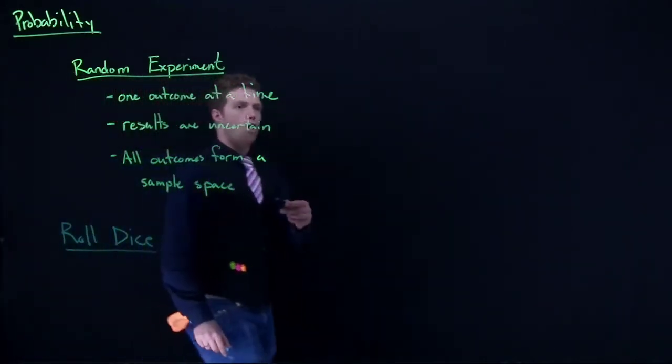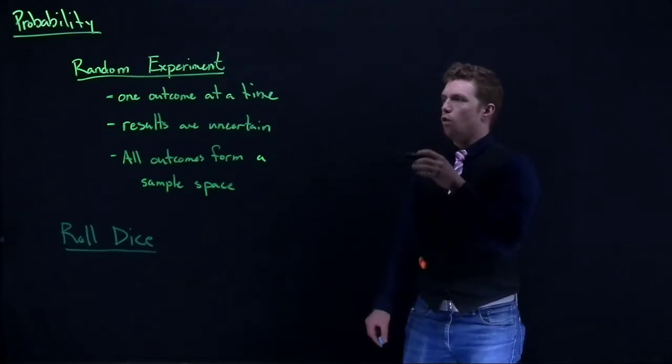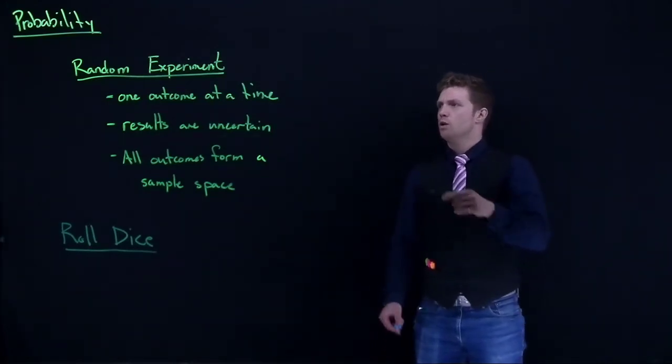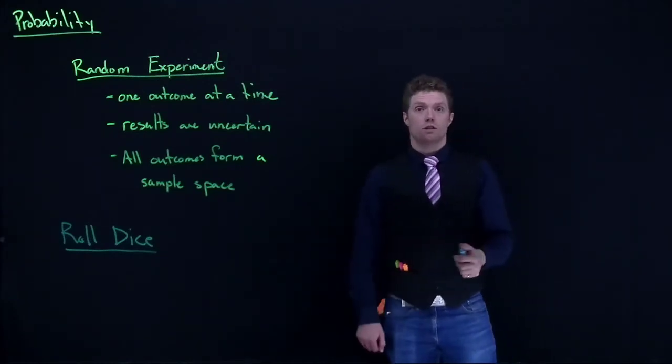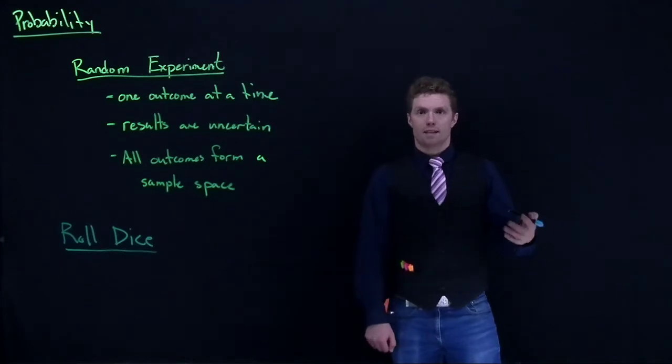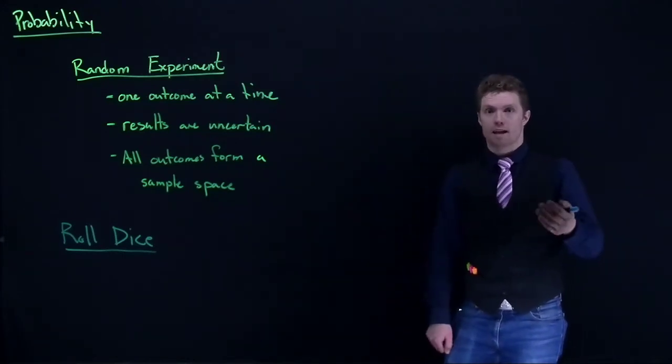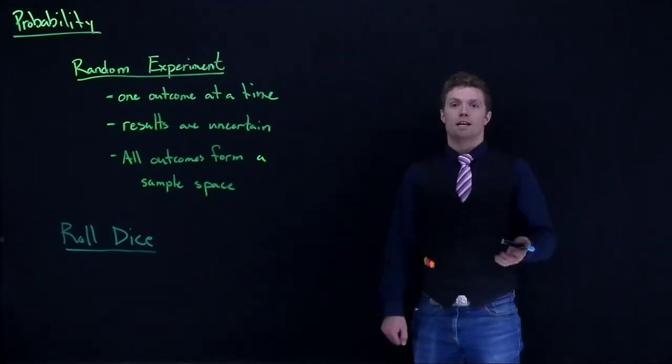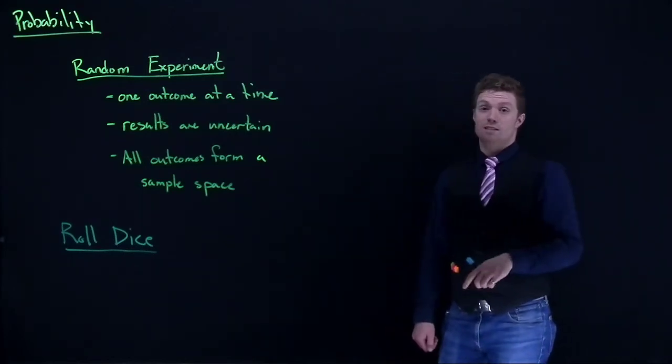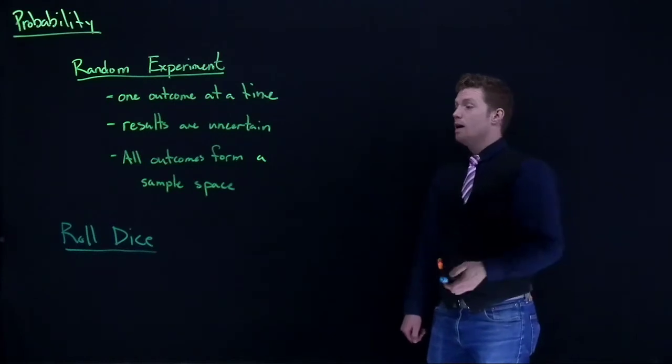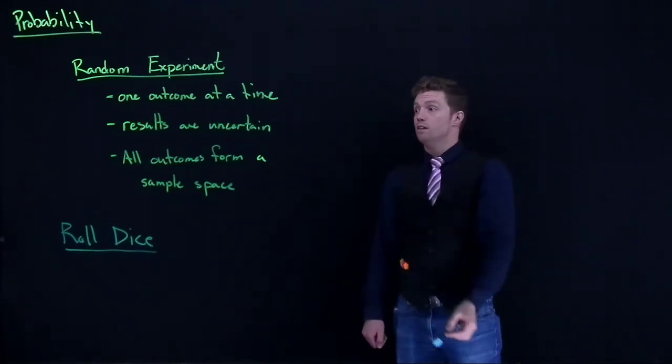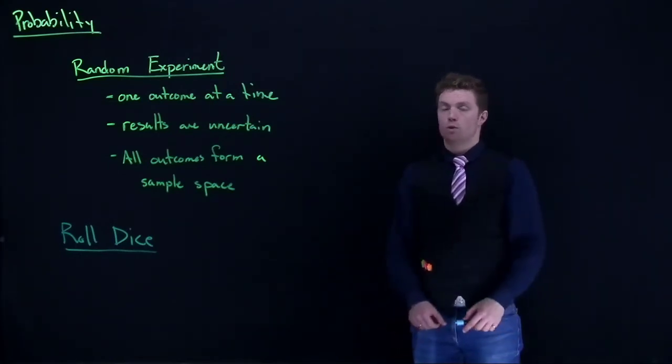Rolling a dice fits all of these parameters. Only one outcome can happen at a time with a regular six-sided dice. The results are uncertain for any given dice roll. I don't know what number is going to happen next. If I did, I could make a lot of money gambling or playing games with friends. The dice roll is uncertain, and all outcomes form what's known as a sample space.